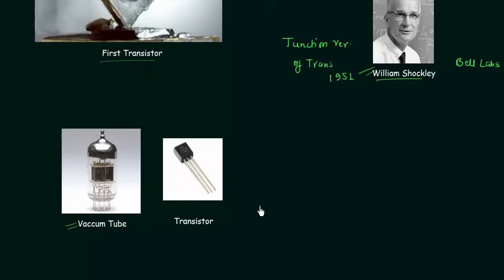BJT is a three-terminal doped semiconductor device and it is used in amplification of weak signals and switching operations. So there is use of BJT in both analog and digital electronics.